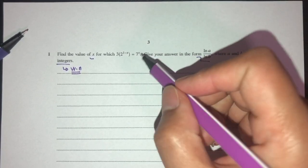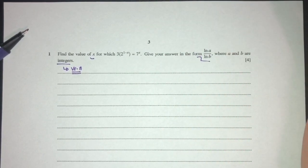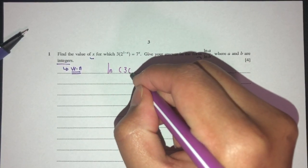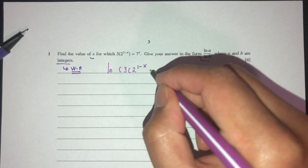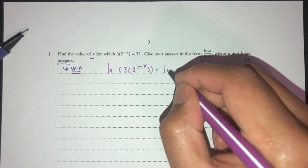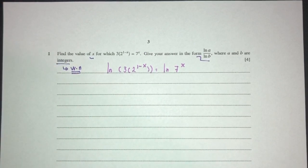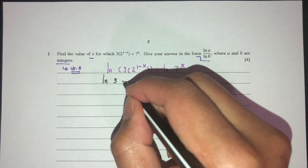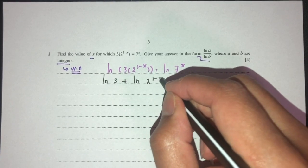As you can see here, we have x on top as a power, so we have to use ln on both sides. Apply ln on both sides. ln of this thing over here, ln of 7^x. Now simplify. Let's see what happens. That'll become ln of 3 plus ln of 2^(1-x).